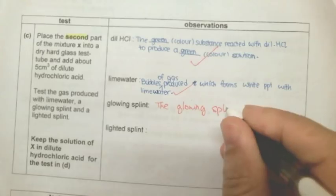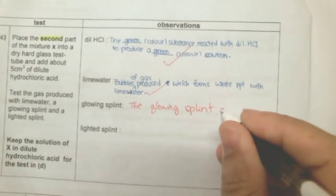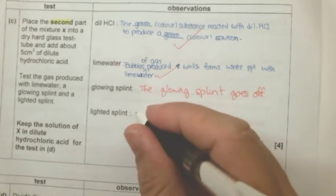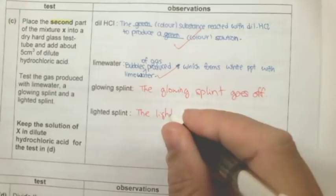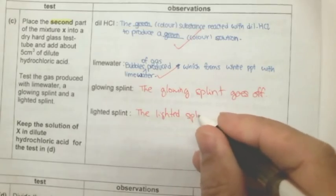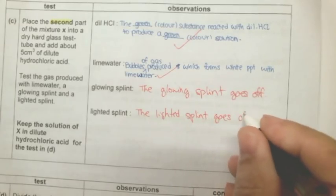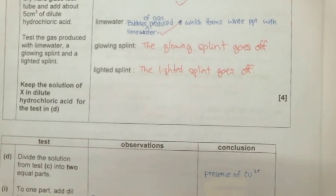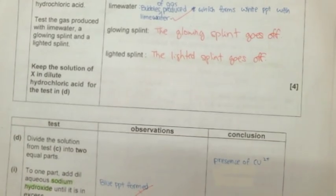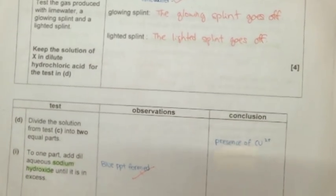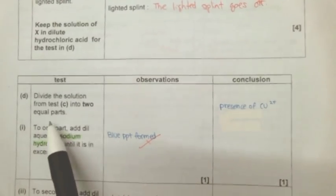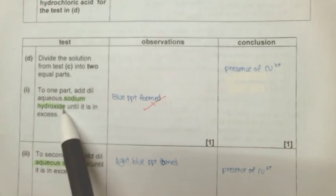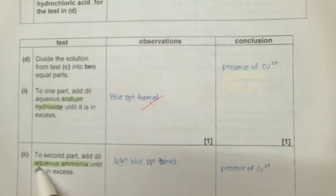After you've added in the acid, you are supposed to divide the solution into two parts. The first part is supposed to add sodium hydroxide and the second part is supposed to add aqueous ammonia.